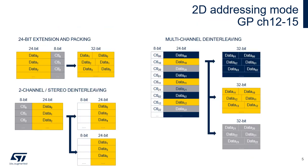The first use case of burst stride is 24-bit extension and packing. A source buffer contains data and control pairs. GPDMA channels 12 to 15 are capable of extracting the data field and packing the resulting 24-bit data back-to-back in the destination buffer. A burst address offset of plus one byte and a burst length of three bytes can be programmed for the source. No burst stride is required on the destination.